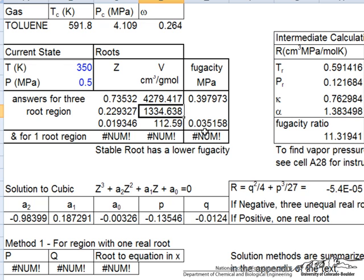So it calculates the fugacity. Notice the units are megapascals. The stable state is the one with the lowest fugacity. So at 350 Kelvin, 0.5 megapascals, we're going to have a liquid phase for toluene—perhaps not too surprising at that kind of pressure.